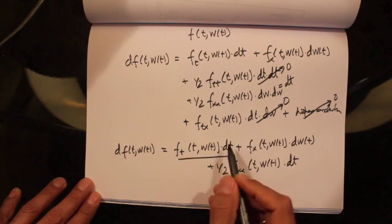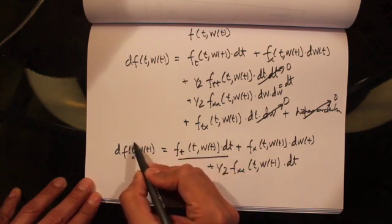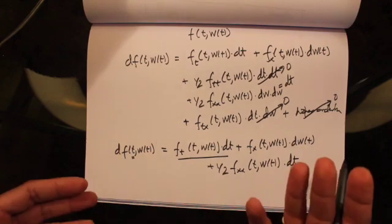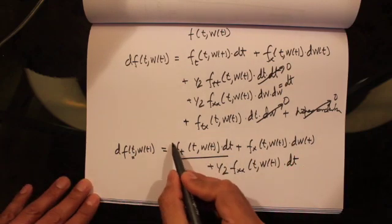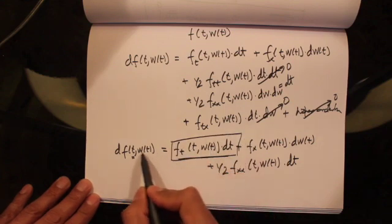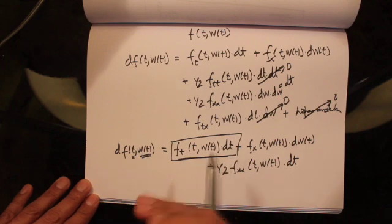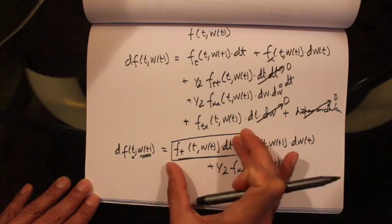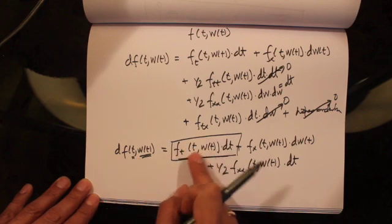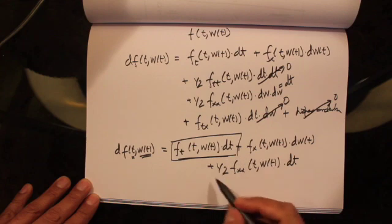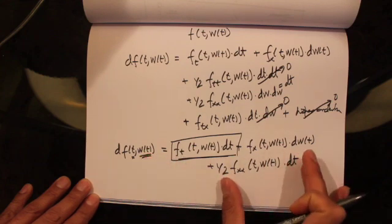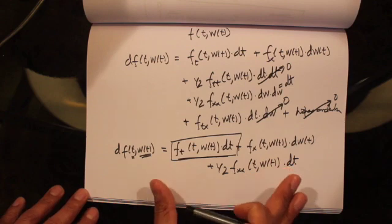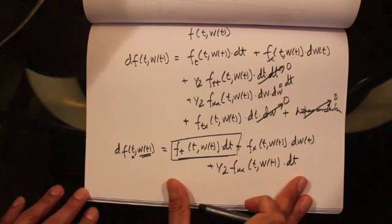In other words, what we're doing is using a Taylor series expansion and considering first-order terms for arguments where the quadratic variation is equal to zero — so the argument t has quadratic variation of zero, and we only consider first-order terms. But for arguments where the quadratic variation is not equal to zero, we consider second-order terms as well. So: first-order terms for quadratic variation equal to zero, second-order terms for quadratic variation greater than zero. This is what we learned in the previous lecture.